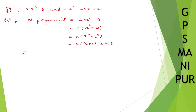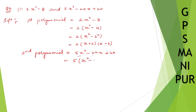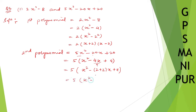Now let me take the second polynomial: 5x squared minus 20x plus 20. From this I can take 5 common, so it will be 5 into (x squared minus 4x plus 4). Next, split the middle term: 4 = 2 plus 2, so x squared minus 2x minus 2x plus 4.